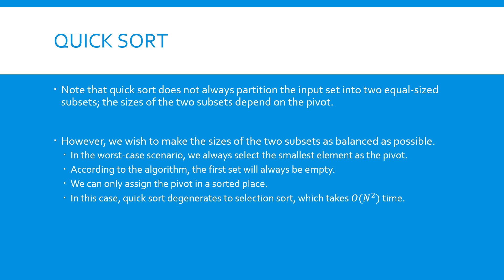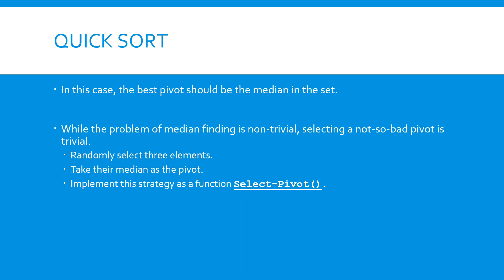As we walk through the algorithm, you may notice that the two subsets may not have equal sizes. In the worst case scenario, if we always select the smallest element as the pivot, then the smaller subset will always be empty. In this case, each partition phase can only help us identify the smallest element, which is the pivot. And the quicksort algorithm degrades to the selection sort algorithm, which runs in O(n²) time. This is the worst case time complexity for the quicksort algorithm. So, to avoid the worst case scenario, we hope that we can select a pivot that partitions the input list into two equal-size subsets. In other words, we wish that we can choose the median in the set to be the pivot.